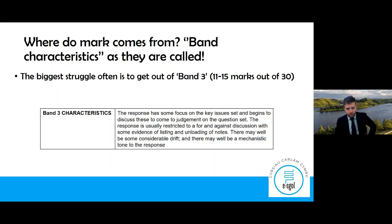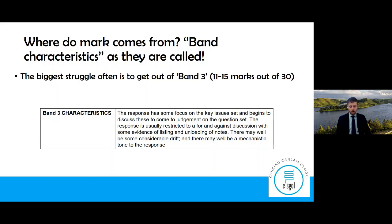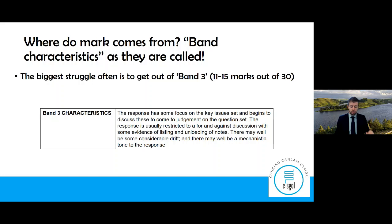The biggest struggle I've found — and I think history teachers elsewhere may agree — is getting out of band three, which is 11 to 15 marks out of 30. To get out of that is quite a hurdle because you're focusing on some key things like judgments and debates. Once you've got out of that, you can move up those bands quite speedily.